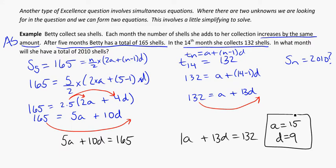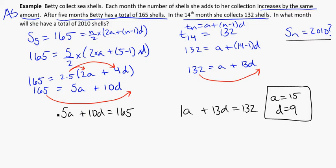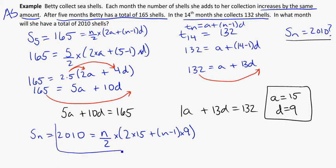So in the first month she had 15 shells, and she collects 9 more than she did each month. So in what month will she have a total of 2010 shells, looking at this last part of the answer? Using our sum equation, we are looking for an Sn when it equals 2010. We don't know n: n over 2 times 2, but now we know A, 2 times 15 plus n minus 1 times 9. And we can put this straight into the calculator, just as we see it, and solve for n. In the calculator this is just the part we're putting in. This time we're still going to be using equation, but we are going to use solver and enter in exactly what we see.